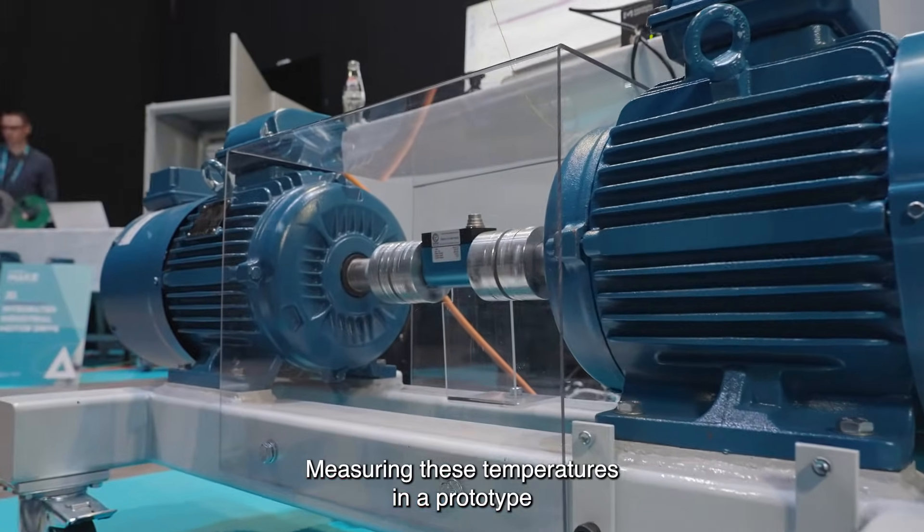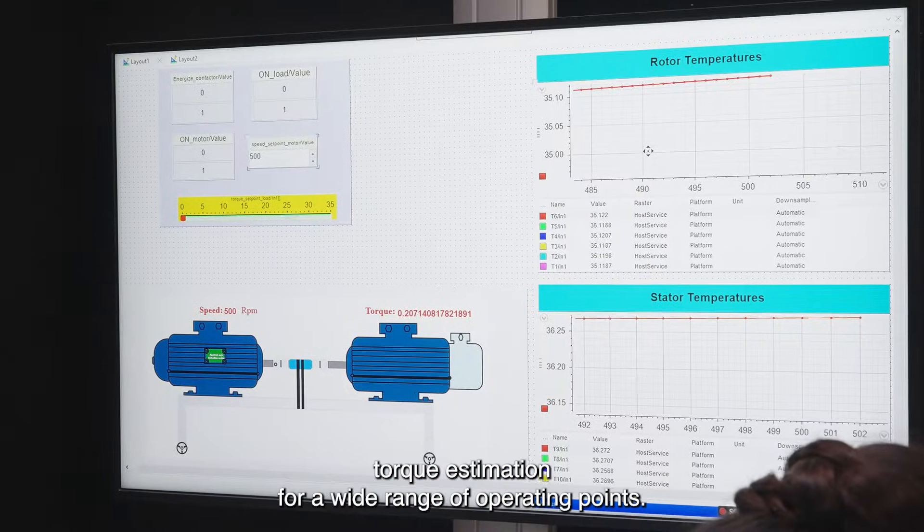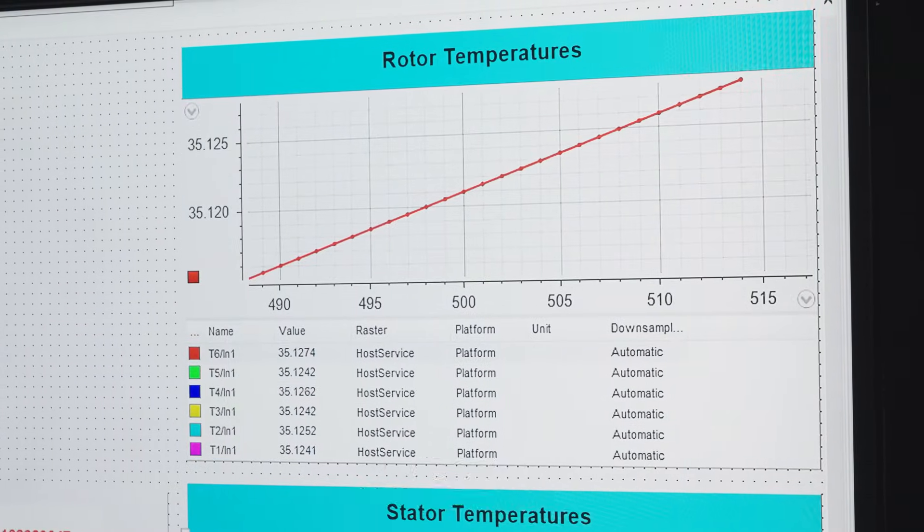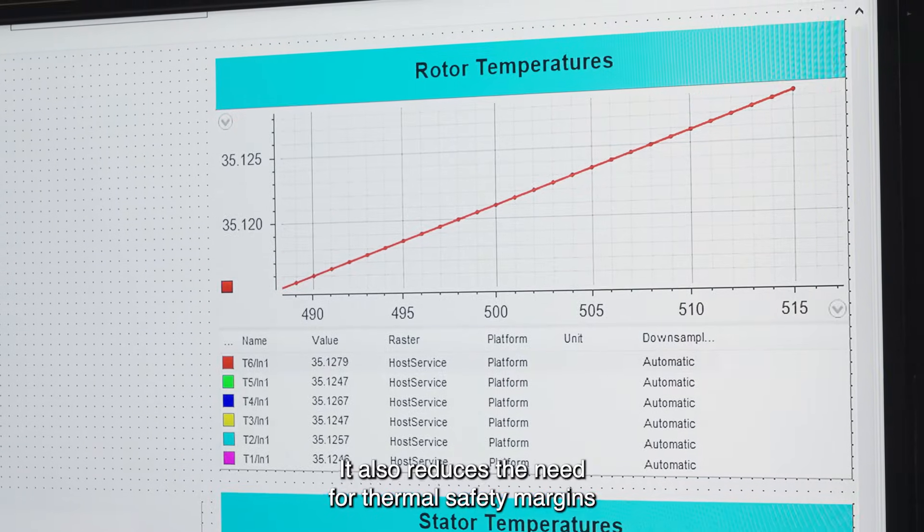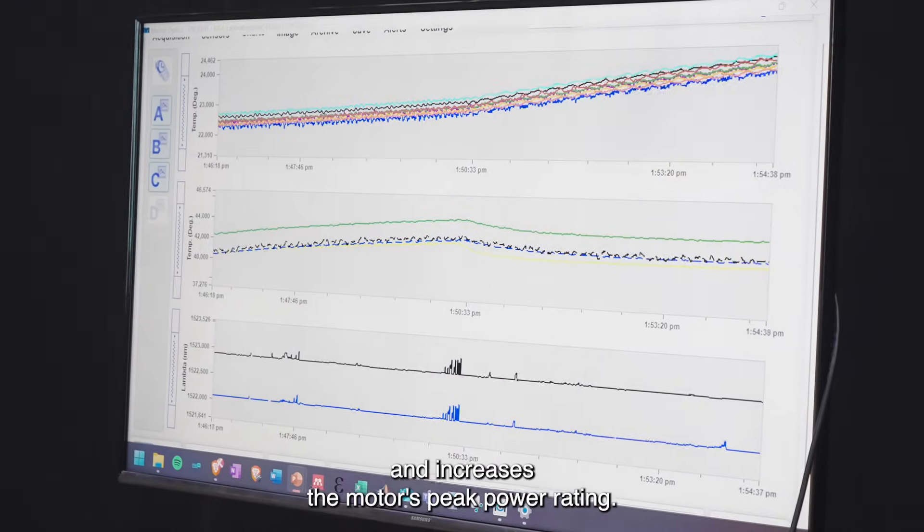Measuring these temperatures in a prototype enables more accurate torque control and sensorless torque estimation for a wide range of operating points. It also reduces the need for thermal safety margins and increases the motor's peak power rating.